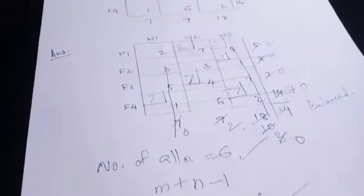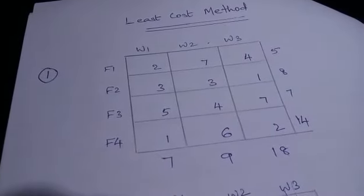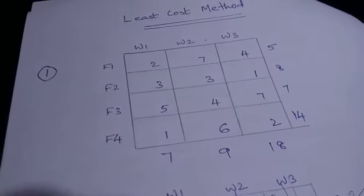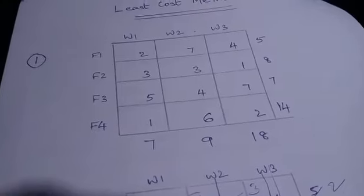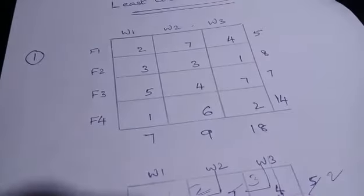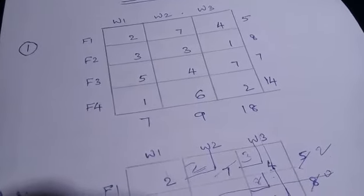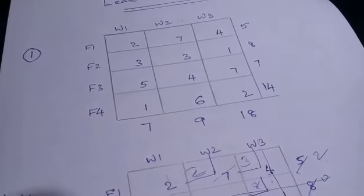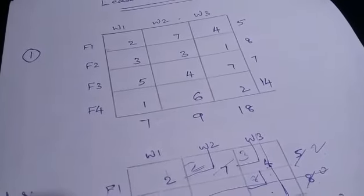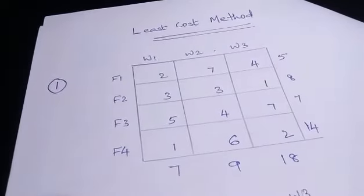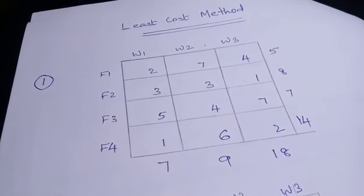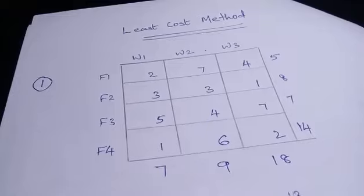This is how the least cost method is done — it is very simple. Just consider the least value from the table and allocate it. Before that, check whether the problem is balanced or not. If it is balanced, carry on; if not, make it balanced first. Find the least value from the list, substitute the lesser of demand or supply as the allocation for that cell, cut either the row or column, and continue. This is the least cost method, the second method of the transportation problem. Hope it was clear for you.